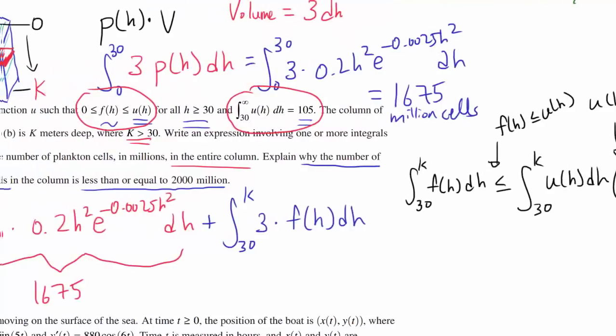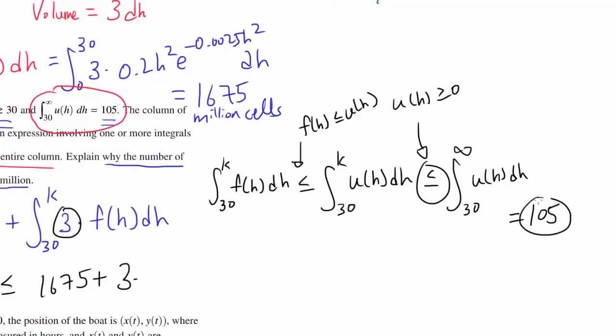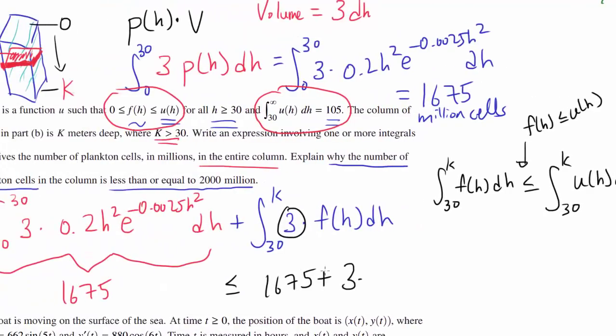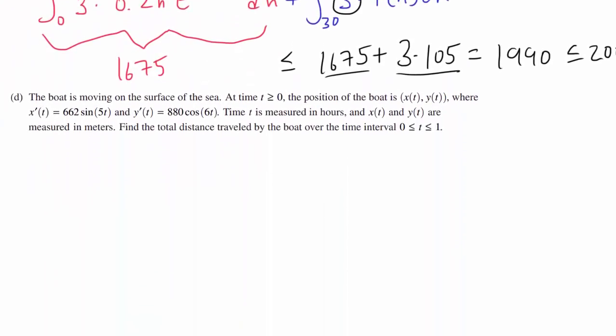That's telling us this entire thing is less than or equal to - the first part is 1675, and the second part is 3 times the integral from 30 to K of F(H)dH, which we know is less than or equal to 105. When you multiply this out, that's 315, add it up, we get 1990, which is of course less than or equal to 2000. So we have shown that this is less than or equal to 2000.